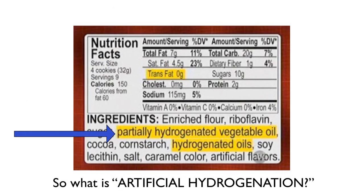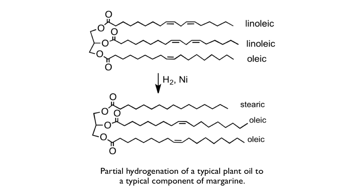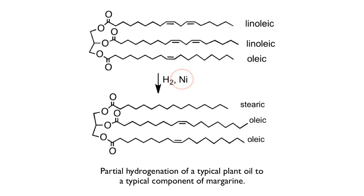This leads to the natural question: what is artificial hydrogenation, which you see on a lot of processed foods? It means exactly what it sounds like — you add hydrogens artificially. This is done by bubbling hydrogen gas through vegetable oil heated to 250–400 degrees Fahrenheit in the presence of a metal catalyst, usually nickel or sometimes platinum, and the process can take several hours. The double bonds get broken and hydrogens are inserted. We call it partial hydrogenation because full hydrogenation creates stearic fatty acid chains that are too waxy and solid for most food use, so the process is stopped partway.